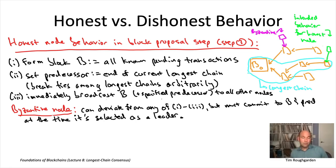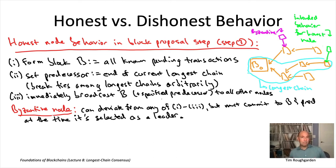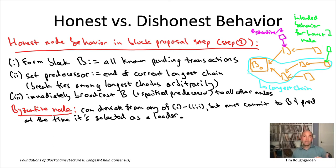While the power to delay block announcements doesn't interfere with liveness or consistency, it does interfere with additional properties you might want a longest chain protocol to have. We'll see that in lecture ten when we discuss the famous selfish mining attack. Selfish mining shows that in a blockchain using block rewards, like Bitcoin and Ethereum, if block producers are profit-maximizing, it may be in their interest to sometimes withhold announcement of a block they create.